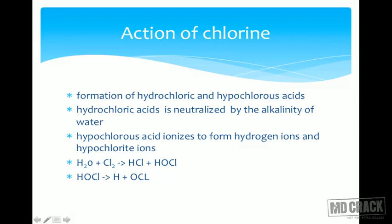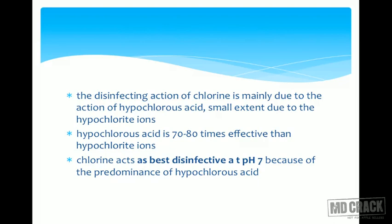Hypochlorous acid ionizes to form hydrogen ions and hypochlorite ions. These end products are less efficient; what we want is hypochlorous acid. The chemical reaction is: H₂O + Cl₂ → HCl + HOCl. The second reaction, HOCl breaking down into H⁺ and OCl⁻, is not wanted because those products are not effective in disinfection. So there is a synergy: hydrochloric acid reduces alkalinity and helps hypochlorous acid act.